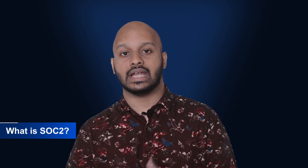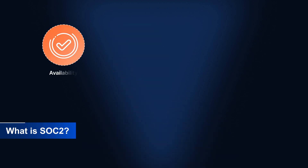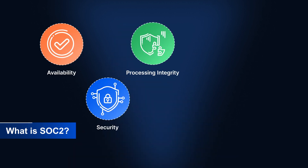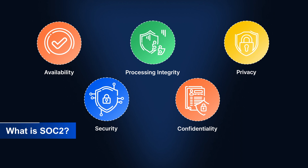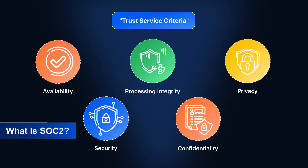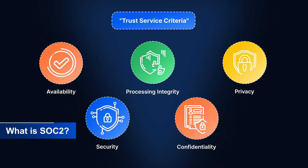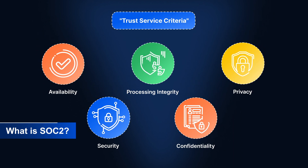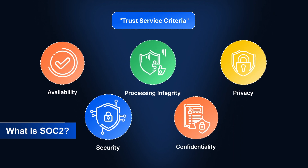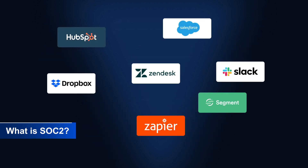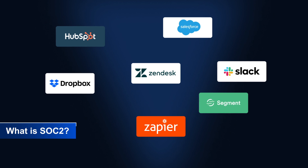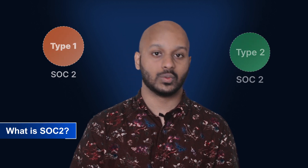SOC 2 evaluates a business's controls over data and operations, specifically availability, security, processing integrity, confidentiality, and privacy. These are called trust service criteria. When an organization chooses to be SOC 2 compliant, they can choose either one of them or all five. SaaS-hosted cloud companies are the most likely businesses to be asked for a SOC report. Similar to SOC 1, there are two kinds: a SOC 2 Type 1 and a SOC 2 Type 2.